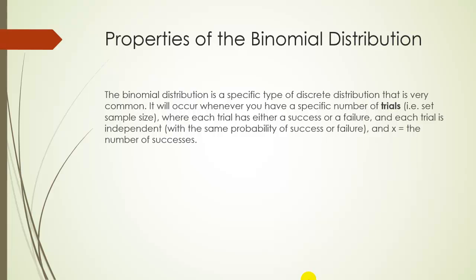So a binomial distribution is going to be an experiment or a variable that has a set number of trials. In other words, we have a set sample size. We might look at maybe tossing a coin 10 times, and so our sample size would be 10. And then each trial either is going to have a success or a failure. So like tossing the coin, you can either get heads or tails. If we're interested in counting the number of heads, then a success would be considered a head.